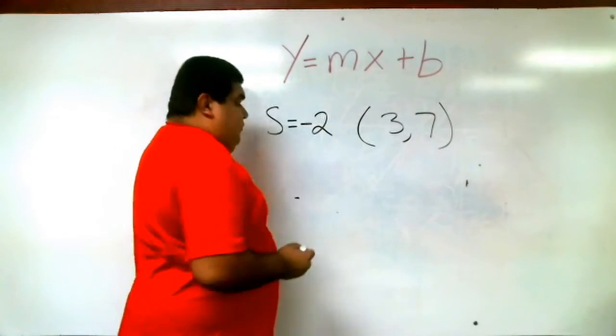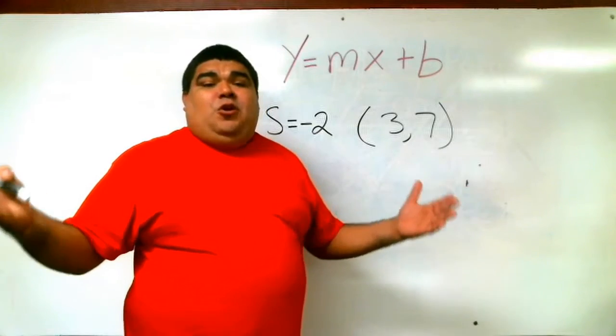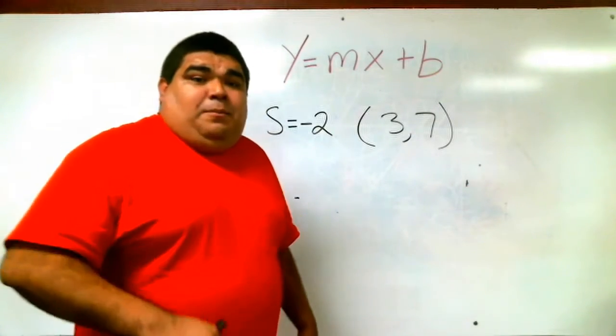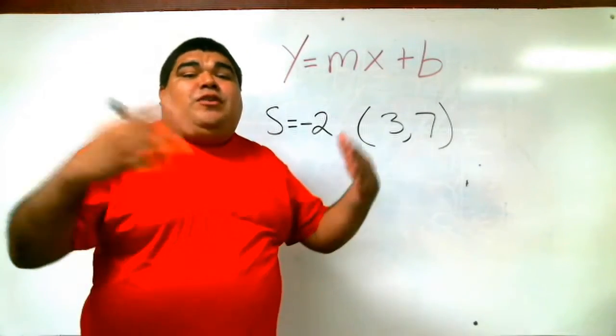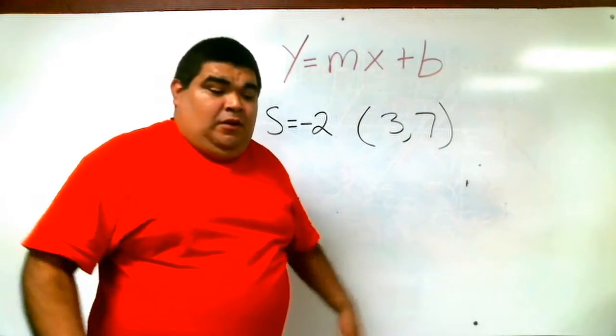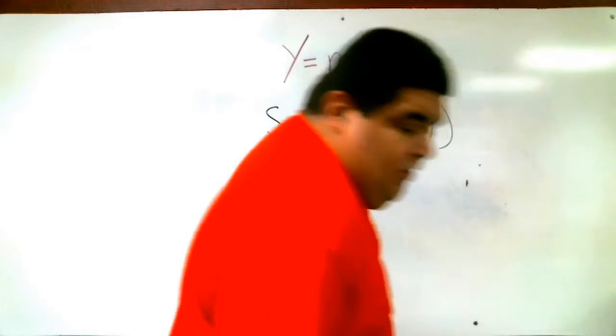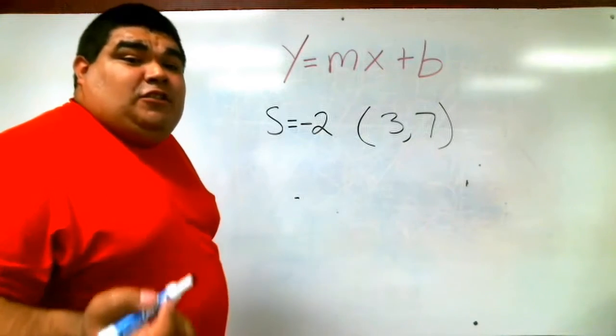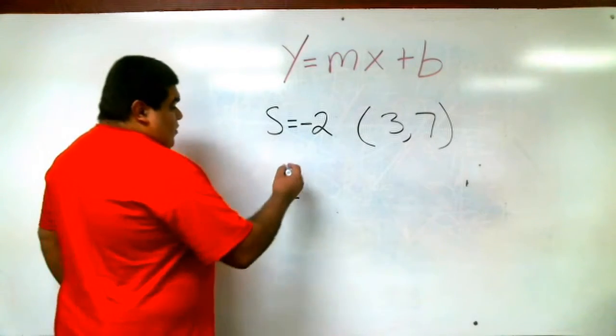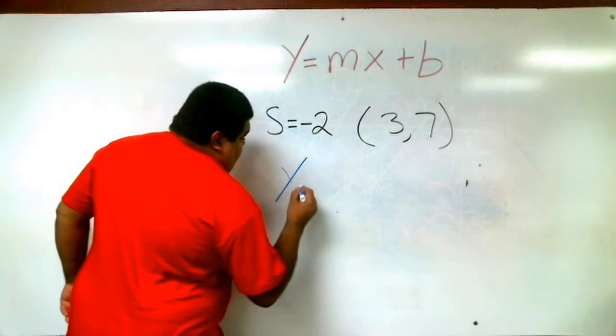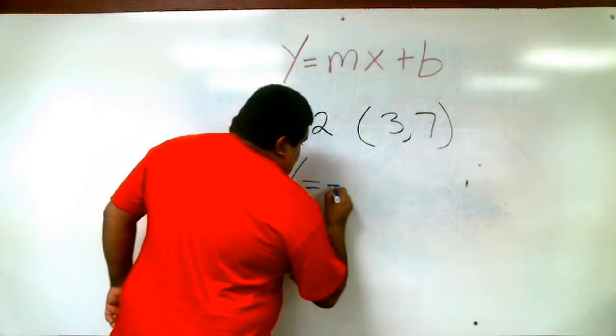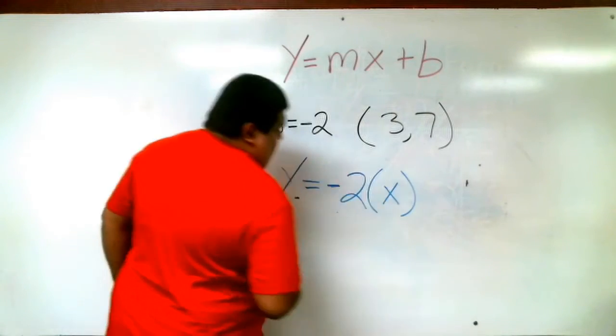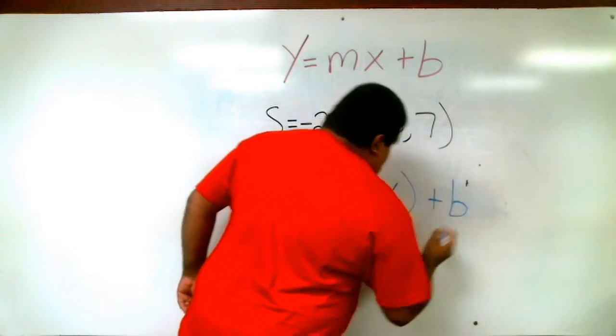Luckily, like I said, it already gives us a slope, so we really don't have to find it in this one. But we still have to find that b, because we're creating an equation today. We can start off by plugging in that slope into the equation. We have y equals negative 2, parentheses x plus b.